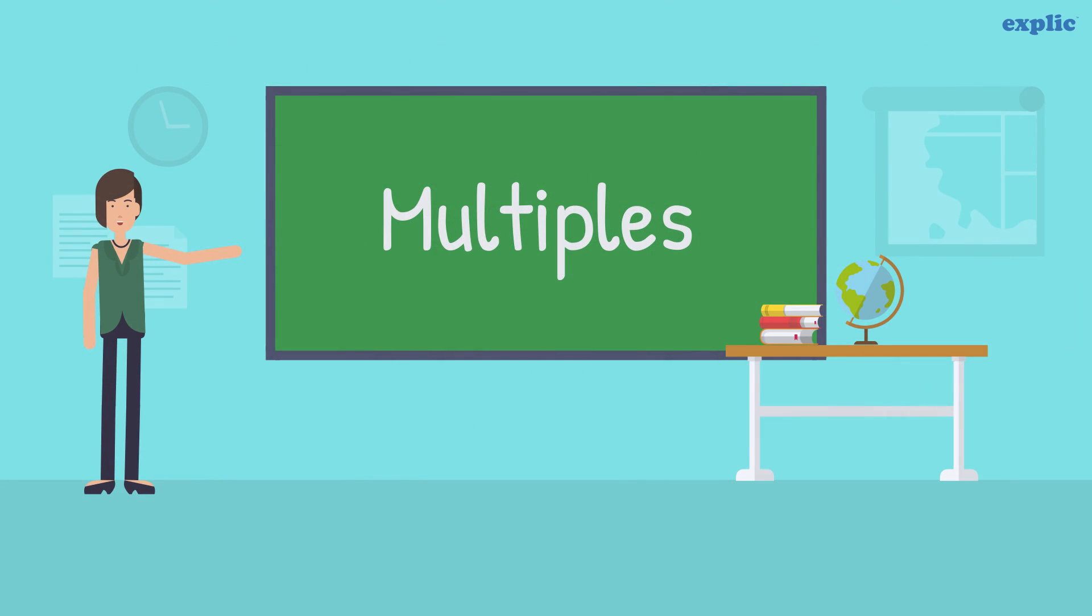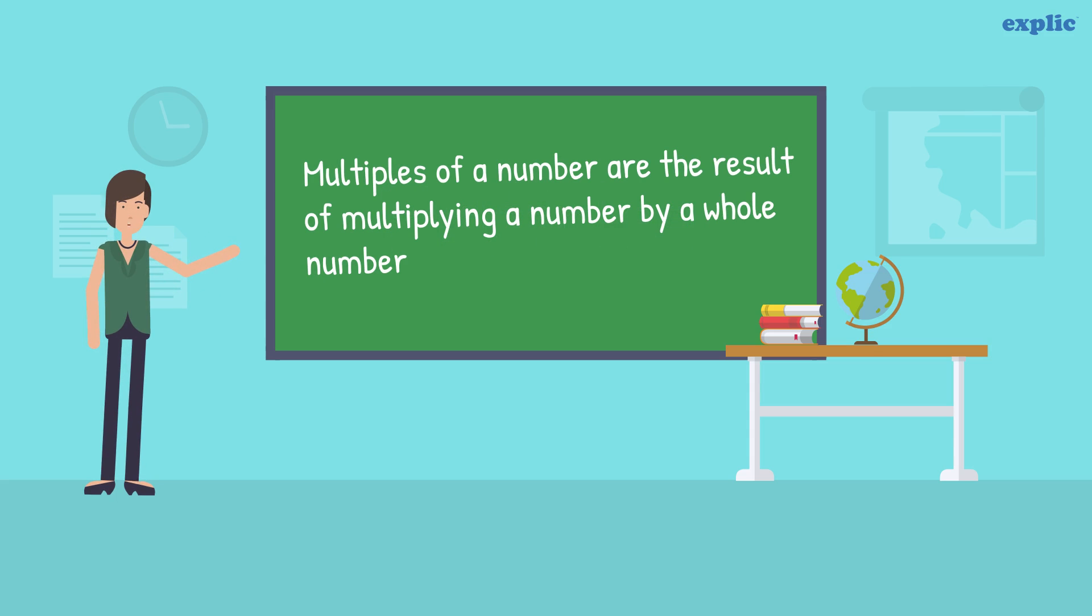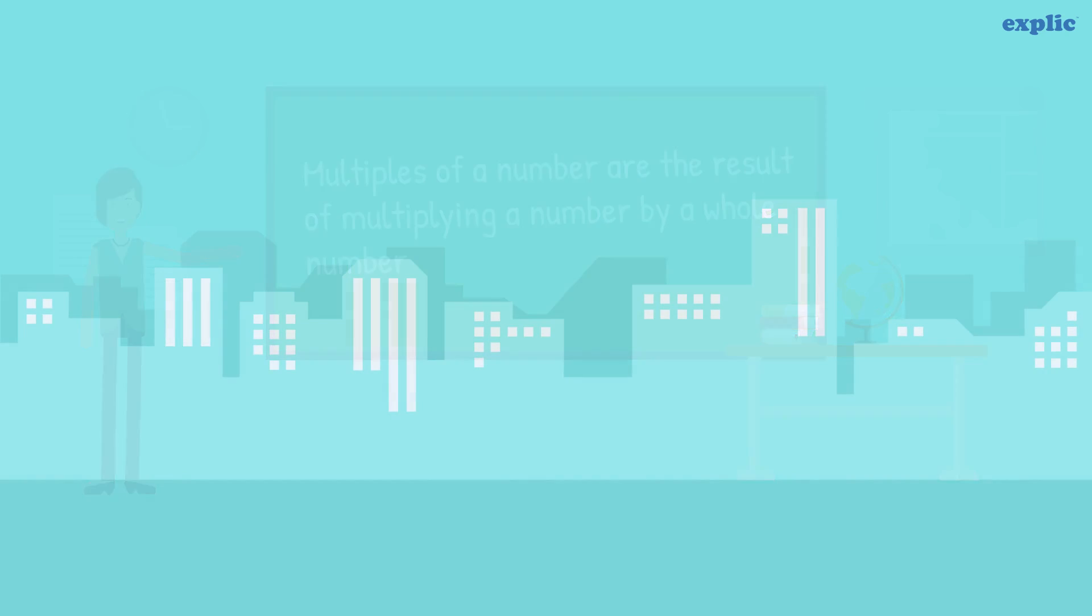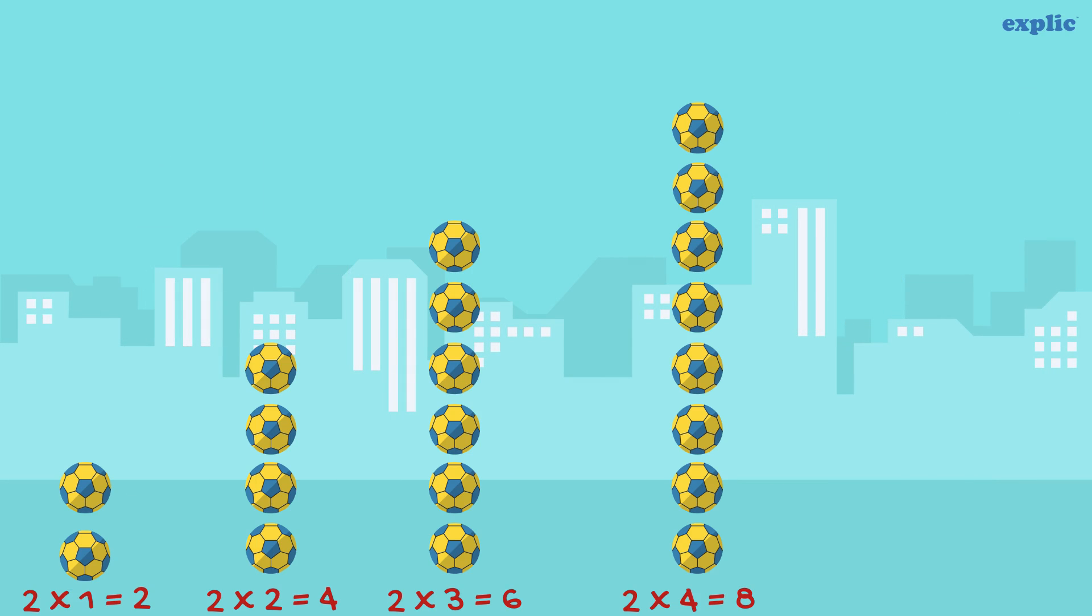Let's learn about multiples now. Multiples of a number are the result of multiplying a number by a whole number. For example, multiples of 2 are 2, 4, 6, 8 and 10.